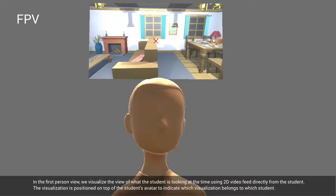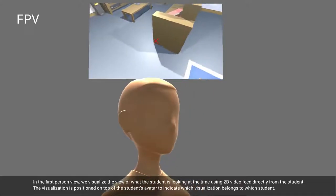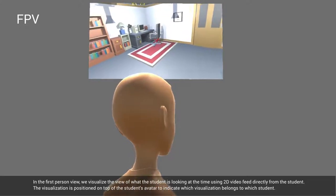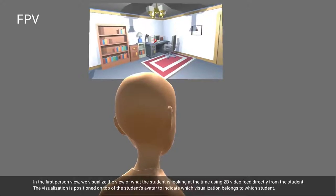We designed three visualization settings for multi-user observation. In the first-person view, we visualize the view of what the student is looking at using 2D video feed directly from the student. The visualization is positioned on top of the student's avatar to indicate which visualization belongs to which student.